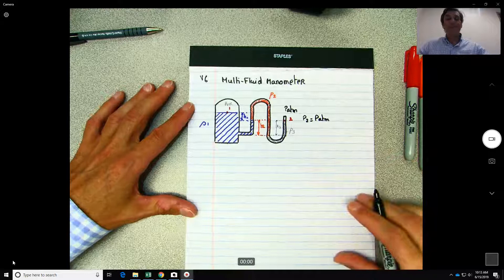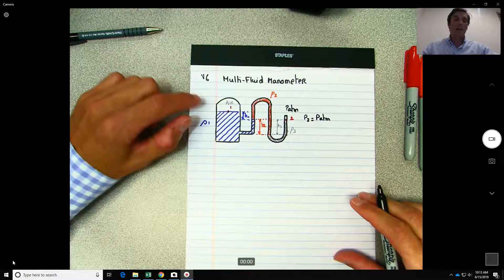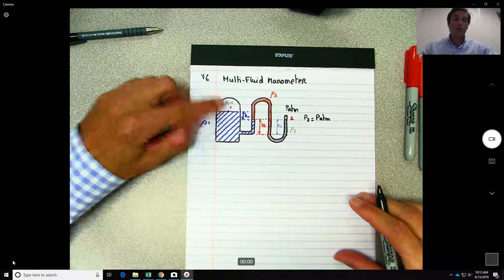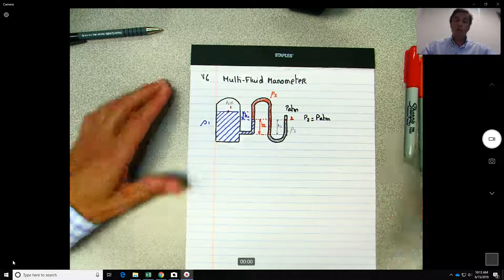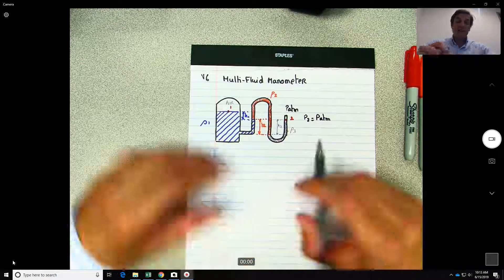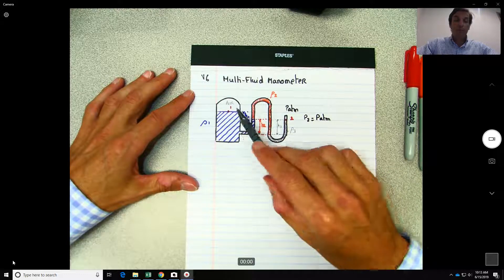Alright, but the goal over here is to find out really what is the pressure at point one. So what we need to do over here is basically know the difference in pressure between different points.